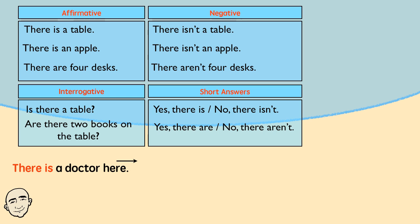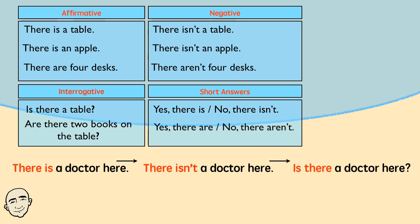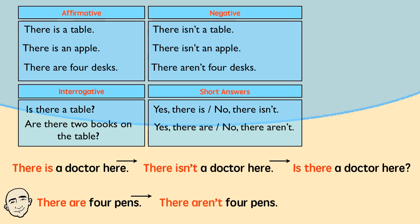There is a doctor here. There isn't a doctor here. Is there a doctor here? There are four pens. There aren't four pens. Are there four pens?